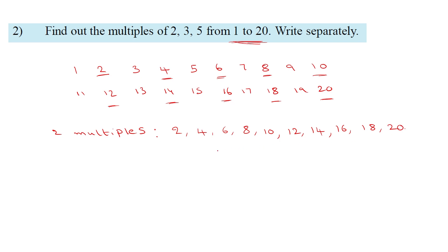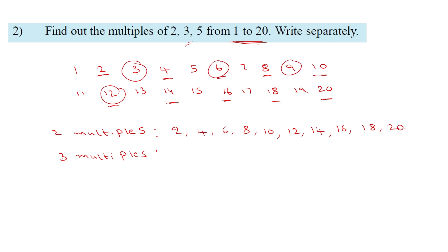Next, the multiples of 3. The multiples of 3 are: 3×1=3, 3×2=6, 3×3=9, 3×4=12, 3×5=15, 3×6=18.